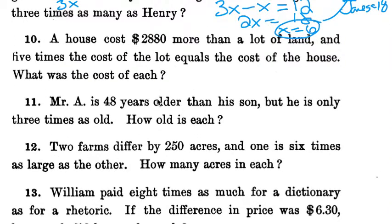Number 10: A house costs $2,880 more than a lot of land, and 5 times the cost of the lot equals the cost of the house. What is the cost of each? Again, we're going to go in here and find what is the thing we know the least information about, and it's the lot of land. So we'll make that our x. 5 times the lot is the house, so we make that 5x.